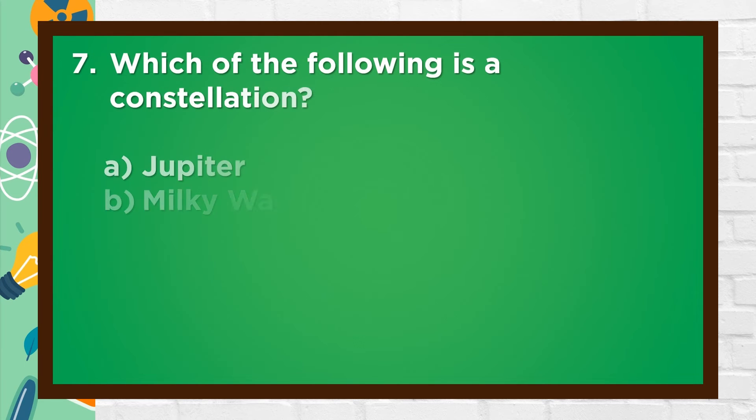Number 7. Which of the following is a constellation? A. Jupiter, B. Milky Way, C. Sun, D. Andromeda.